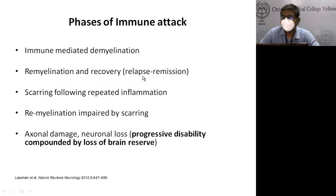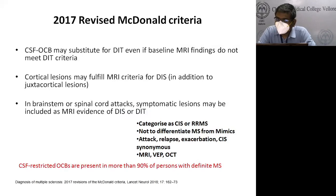The phases of immune-mediated damage are: immune attack, demyelination, remyelination and recovery — which is the relapse-remission phase — followed by scarring from repeated inflammation. Remyelination can be impaired by scar tissue, and over time axonal damage and progressive disability are compounded by the loss of brain reserve.